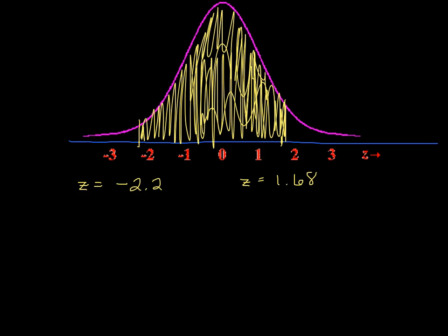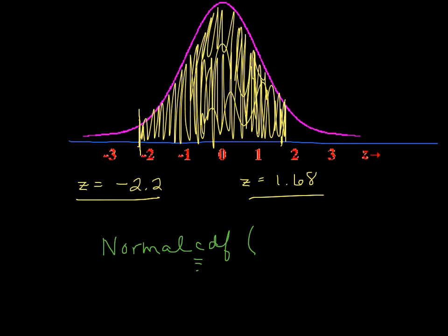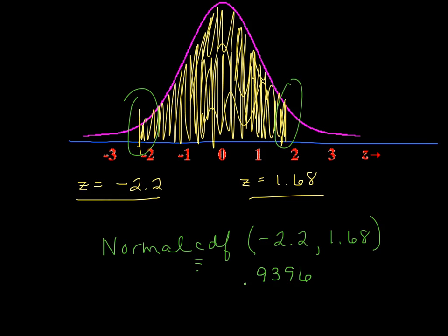Let's do one more. Previously we found areas to the left and to the right. This last example asks for the probability of a z-score falling between two values: negative 2.2 and positive 1.68. You're still using technology and your boundaries. Go to distributions, pull up normal CDF. The leftmost boundary is negative 2.2 — make sure you include the negative sign — then a comma, and the rightmost boundary is positive 1.68. Close your parentheses and you get 0.9396. So almost 94% of the population falls between those two z-score values.